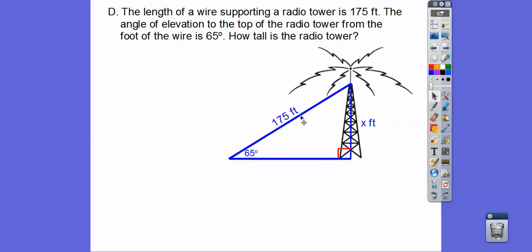So this is angle opposite hypotenuse, sine ratio. Okay, so find the degree, cross multiply, and we find that tower is 158.6 feet high. All right, one more.